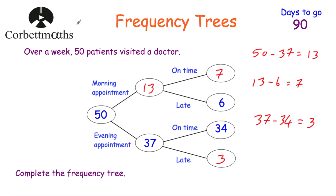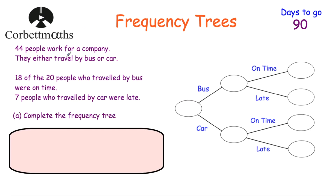The next question says that 44 people work for a company and they either travel by bus or by car. 18 of the 20 people who travel by bus were on time, and 7 people who traveled by car were late. Part A is to complete the Frequency Tree. So pause the video now and have a go at filling out this Frequency Tree using this information.